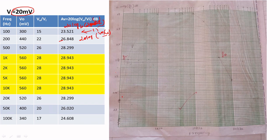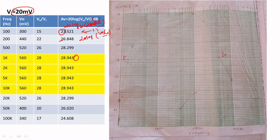Now we need to plot those values on the semilog graph sheet. First you want to understand the semilog graph sheet. The maximum value here is 28.943 and the minimum value is 23.521. First see the minimum and maximum, then choose the scale accordingly. I have used the scale values 23, 24, 25, 26, 27, 28, 29. You can also choose based on your observed values — if you get 10 to 20, you can choose 5, 10, 15, 20.